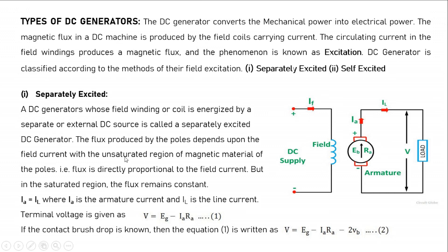The flux produced by the poles depends upon the field current. In the unsaturated region of the magnetic material, flux is directly proportional to the field current If. As the current increases, the flux will increase, but at one stage it reaches saturation, after which flux remains constant. In a separately excited DC generator, the field windings are given supply externally, which is independent of the generator; it only energizes the poles of the generator.